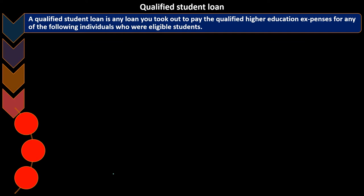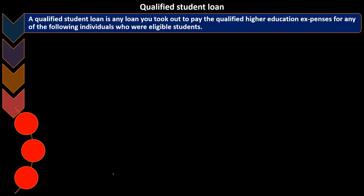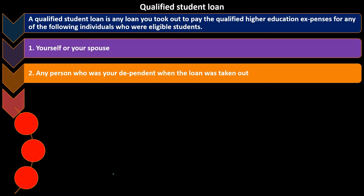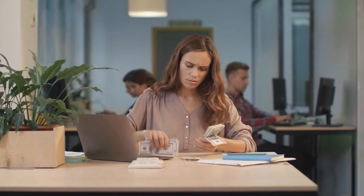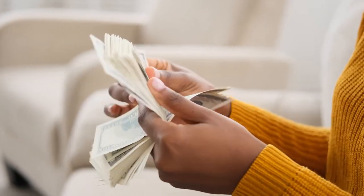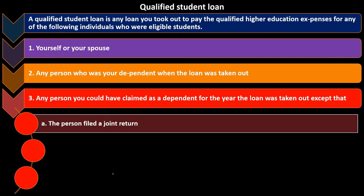A qualified student loan is any loan you took out to pay qualified higher education expenses for an eligible student — specifically: yourself or your spouse; any person who was your dependent when the loan was taken out; or any person you could have claimed as a dependent for the year the loan was taken out. The first two cases are fairly straightforward.